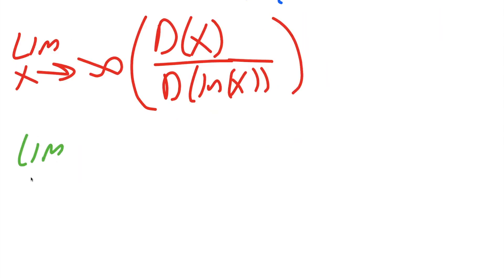So we would get limit as x approaches infinity, and the derivative of x is just one. And the derivative of ln of x is one divided by x.